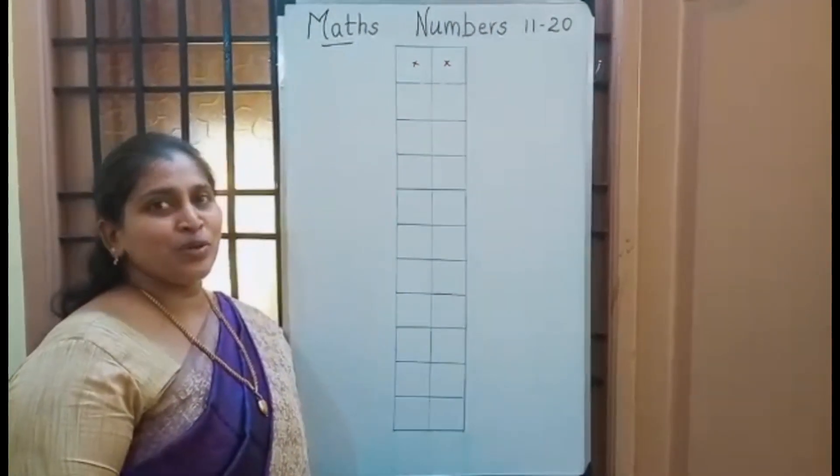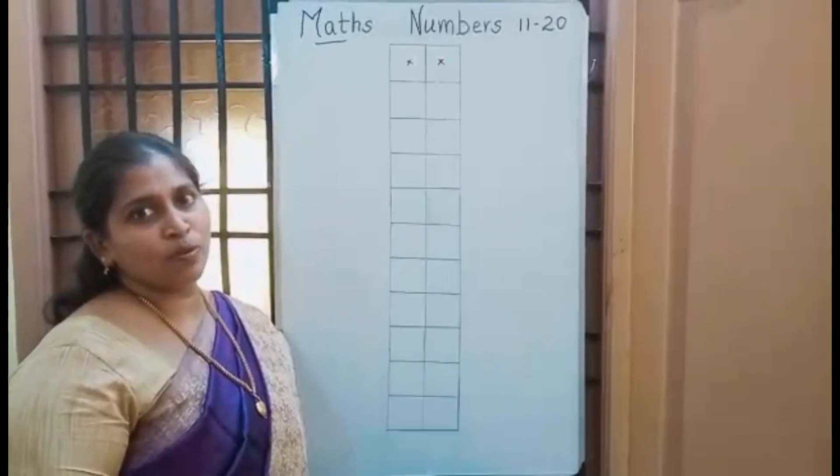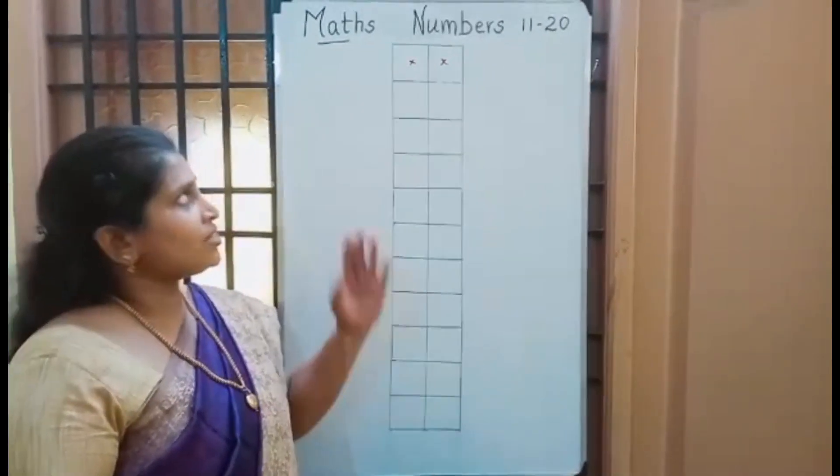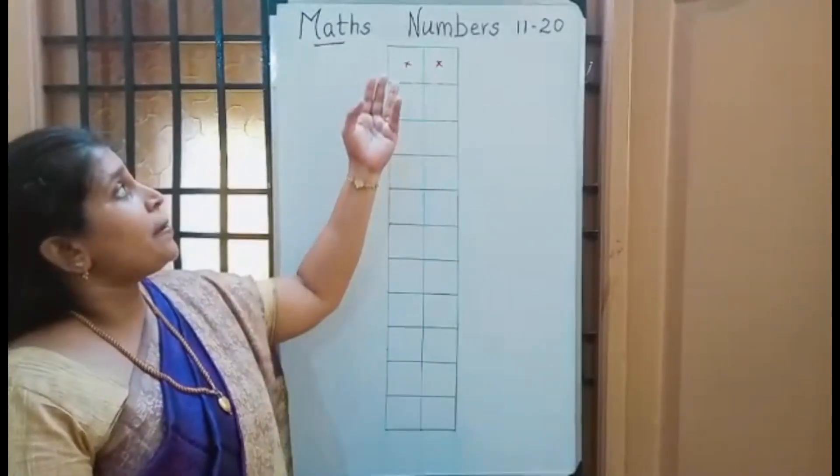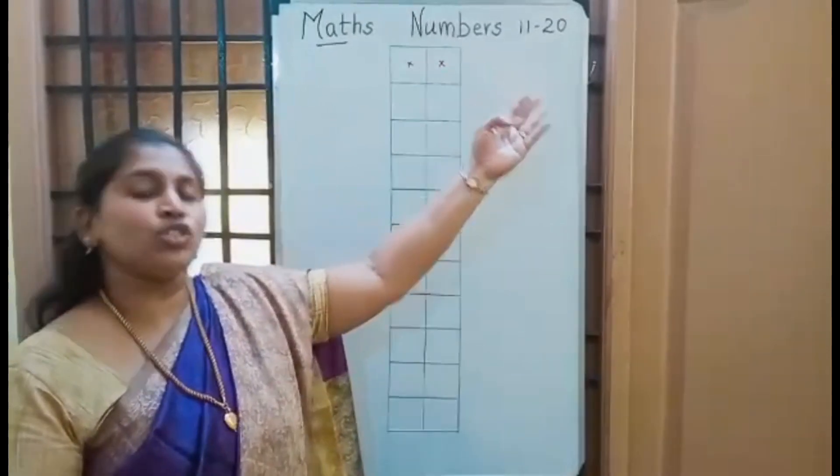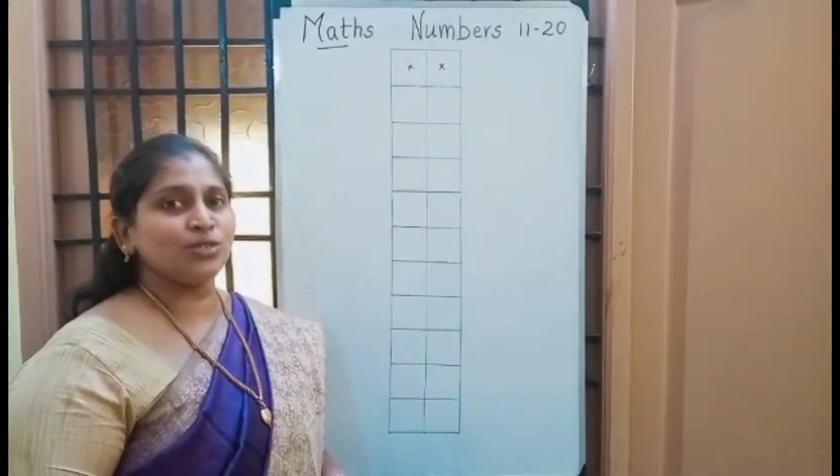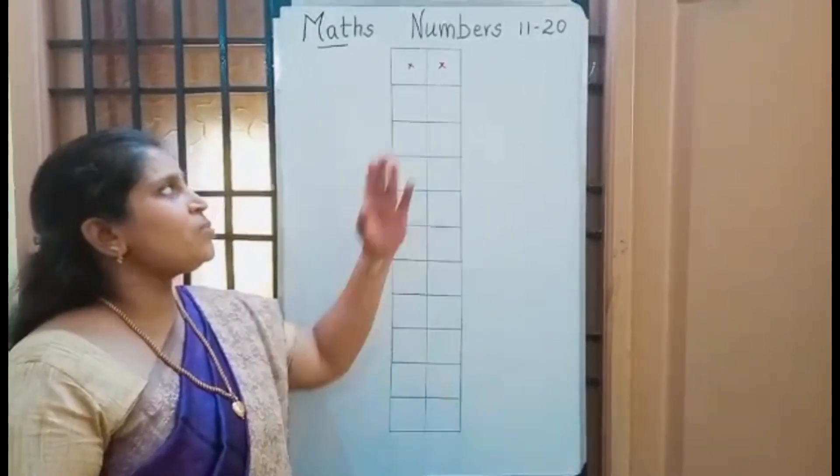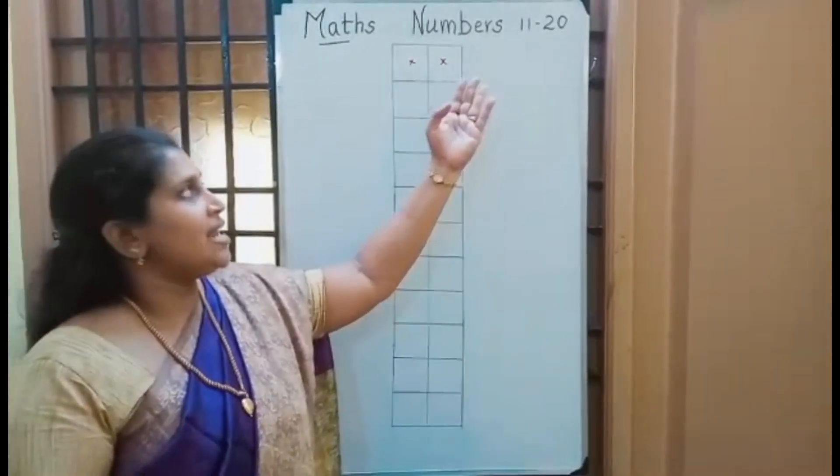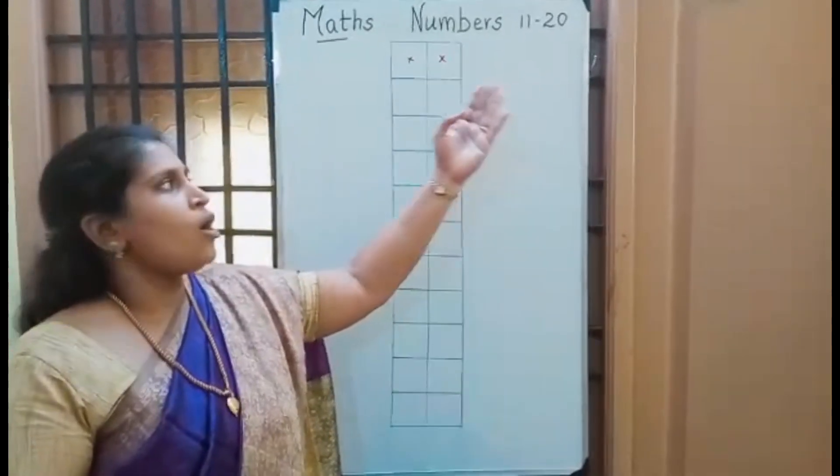Kids, now we are going to write our Maths Notebook. Look here, we are going to write numbers 11 to 20. I know that you all finished numbers 1 to 10, right? Today we are going to write numbers 11 to 20.